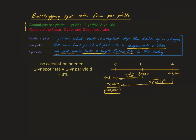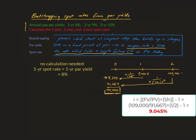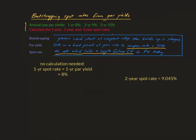The final step is to determine the spot annual rate that explains a present value of 91,667 Rand and a future value of 109,000 Rand after two years. You could use a financial calculator with standard TVM inputs to work this out. Alternatively, use the standard equation to solve for the rate, which is shown on your screen right now. Thus, you have now solved for the two-year spot rate in addition to the one-year rate, and you are ready to carry on to the three-year rate.